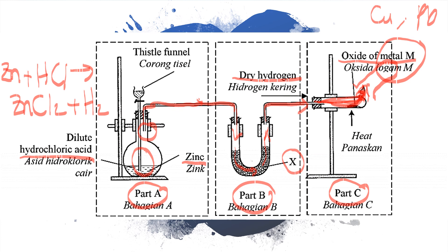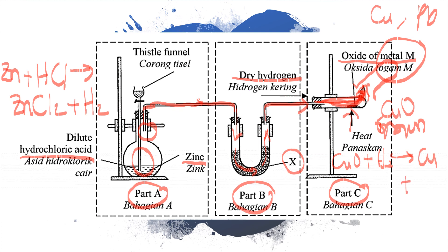Once there is no pop sound, start heating the oxide metal. If the oxide is copper(II) oxide, CuO, the color is black. When copper(II) oxide reacts with hydrogen gas, it produces copper and water. When the black solid turns to brown, the reaction has occurred.